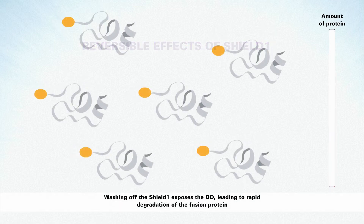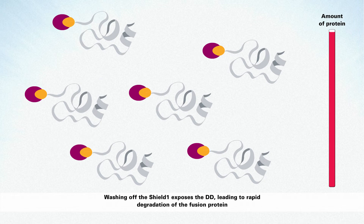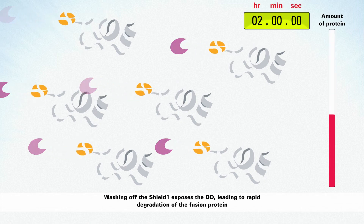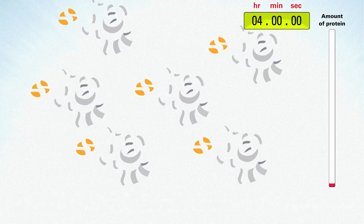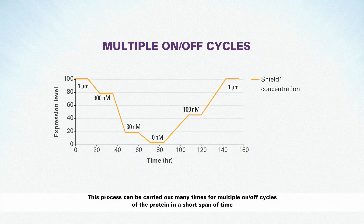Washing off the SHIELD1 exposes the DD, leading to rapid degradation of the protein. This process of stabilization and destabilization can be carried out many times for multiple on-off cycles of the protein in a short span of time.